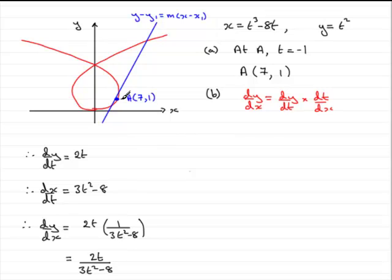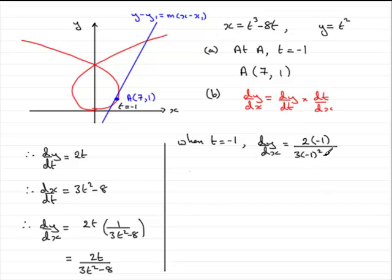Well, we want this point here. The point here is where t equals minus 1. So, what we need to do is say, then, that when t equals minus 1, we can find the gradient dy by dx. It's going to equal 2 times minus 1, all divided by 3 times minus 1, all squared, minus 8. And, if you work that out, what you'll find you'll get is a gradient of 2 fifths. So, we've got our gradient, our m value.